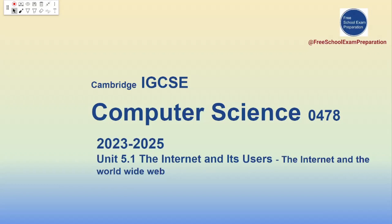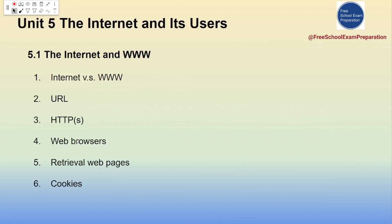Hello, welcome to Free School Exam Preparation. Today we're going to talk about Cambridge IGCSE Computer Science 0478, and this is for the syllabus from 2023 to 2025. Today's unit is Unit 5.1, the Internet and the World Wide Web. We will first talk about the difference between the Internet and the WWW, then explain key terms such as URL, HTTP, and web browsers. Then we'll talk about how users can visit websites and finally discuss the functions of cookies.